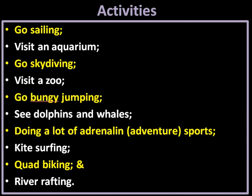In the second slide after the title slide, we have the following expressions: go sailing, visit an aquarium, go skydiving, visit a zoo, go bungee jumping — very dangerous sports — see dolphins and whales, and also adventurous sports like kite surfing, quad biking, and river rafting. These are different activities that can be done if you go to a specific place.